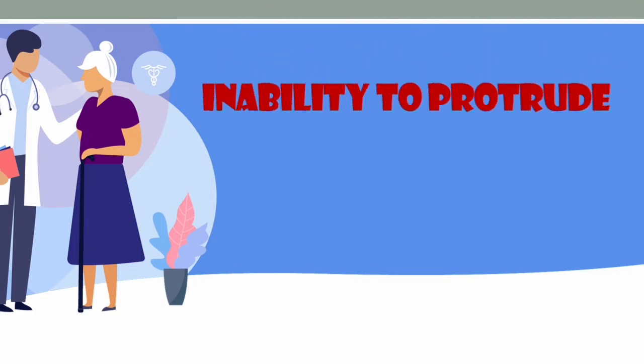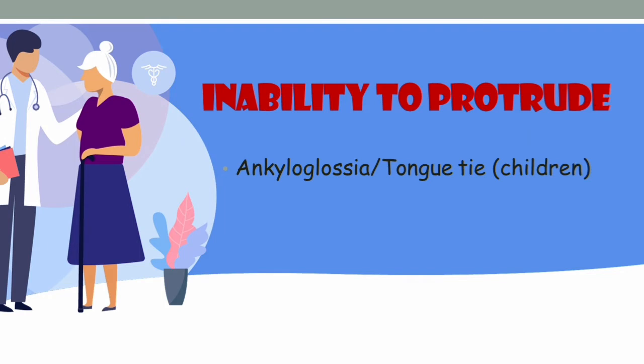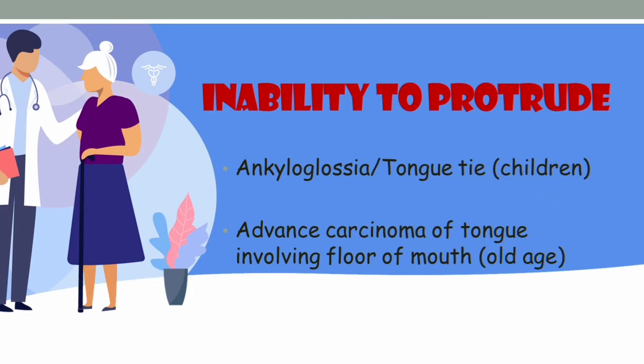Imagine a patient is standing in front of you. First, you ask the patient to show their tongue — the patient will try to protrude it. If there is any problem in protrusion, we note there is some issue. The causes of inability to protrude include ankyloglossia or tongue tie, most commonly seen in children, and in older patients, advanced carcinoma of the tongue involving the floor of the mouth. If there is difficulty opening the mouth itself, we rule out oral mucosal fibrosis and systemic causes like scleroderma.